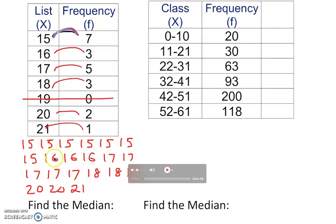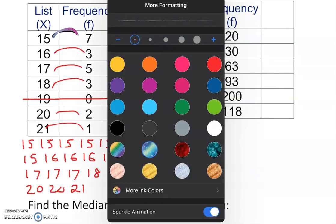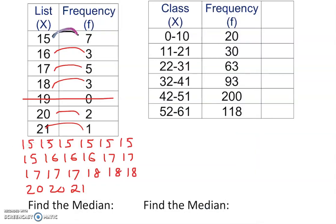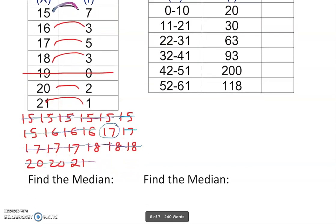Now all you have to do is count how many numbers there are. If it is an odd number of data you cross out one from each side. Cross out two from this side and two from the left, then one, then three, and in the end 17 is in the middle. So the median is 17.